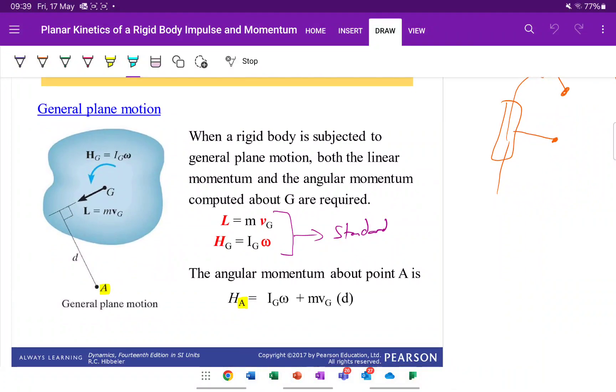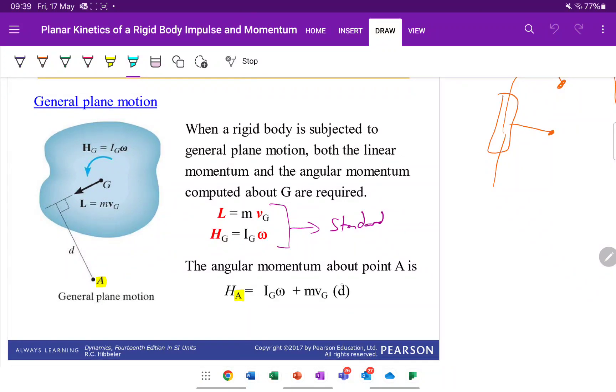And then very, very similar, again, same equations, but just being applied to general plane motion instead of about a fixed point. But they are the same equations, it's just the term is now A instead of O. And the radius has become D instead of R, but the value of the principle is exactly the same here.